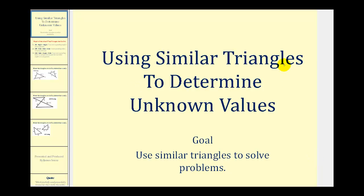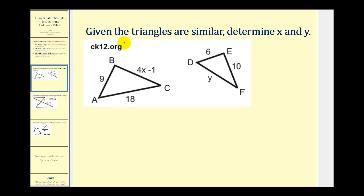Welcome to a lesson on using similar triangles to determine unknown values. We are given that these two triangles are similar, and we want to determine the value of x and the value of y. Remember, if triangles are similar, then the corresponding angles are congruent and the corresponding sides are proportional.